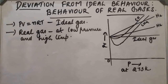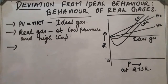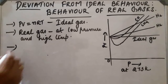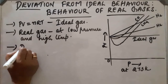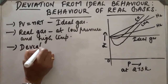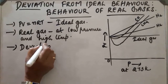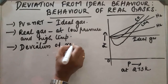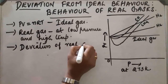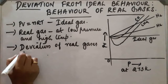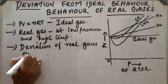The ideal gas equation and other gas laws can be observed only under limited conditions. The deviation of real gases from ideal behavior can be understood by studying the deviation of real gases from Boyle's law.